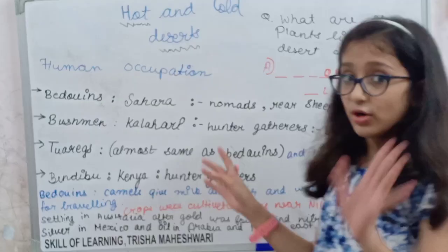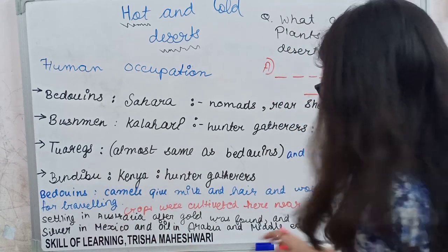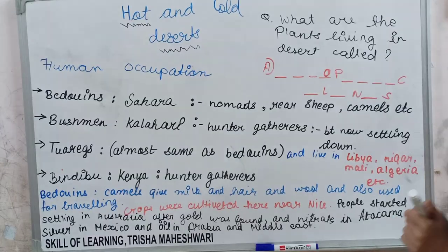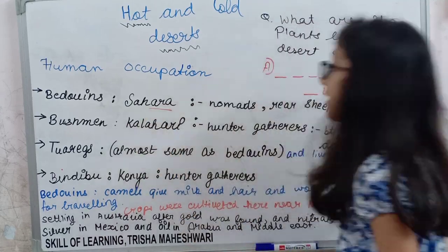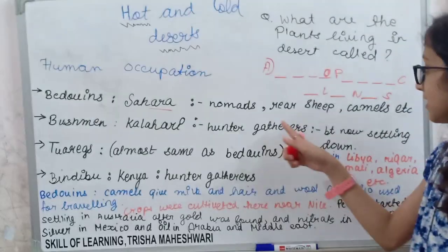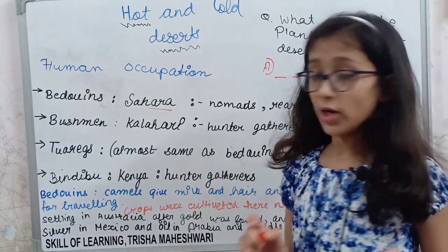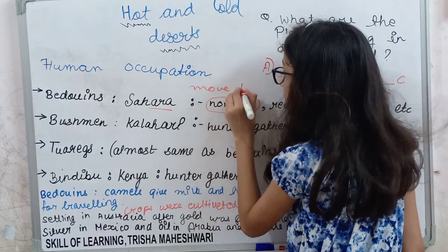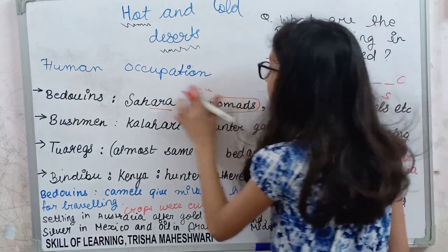Now, human occupation. I found there are kinds of tribes living there — Bedouins, Bushmen, Tuaregs, and Vindibu. Bedouins live in the Sahara Desert. They are nomads — meaning they move from place to place — and they live in tents and camps.